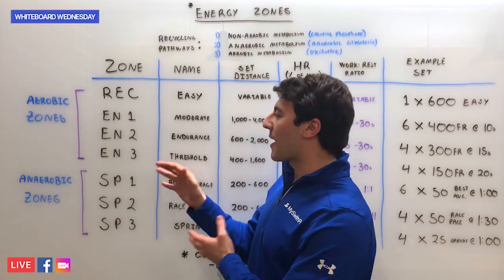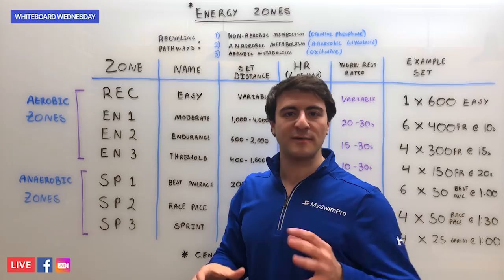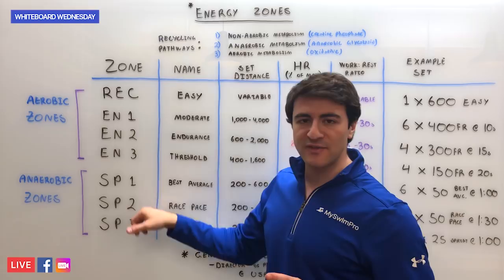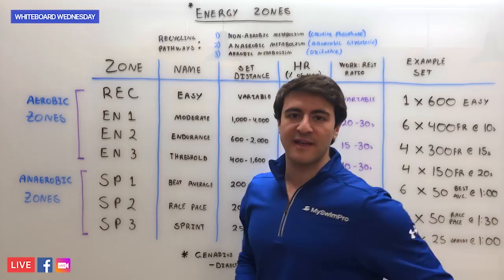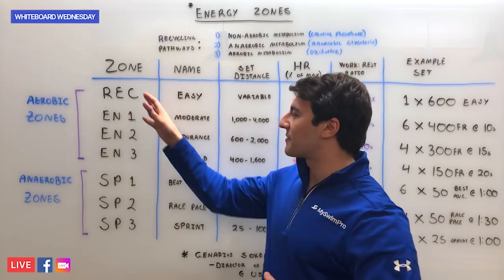You might often see the different zones in only five categories rather than seven. That's because recovery and Endurance 1 are often so similar they'll be grouped into one energy zone, and SP2 and SP3 are very similar and often grouped together — so you'll have only five zones instead of seven. For this example, we're going to stick with the seven different zones.